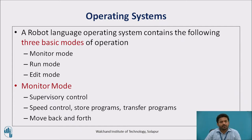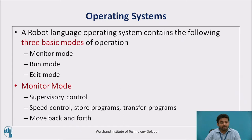The Monitor Mode is used to accomplish overall supervisory control of the system, which may include defining locations in space using a teach pendant, setting the speed control for the robot, storing programs, transferring programs from storage back into control memory, or moving back and forth between the other modes of operation.